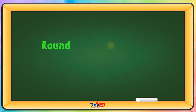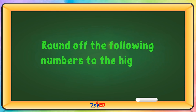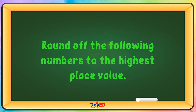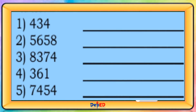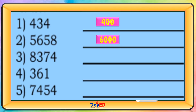Round off the following numbers to the highest place value. Let's round off 434 to 400; 5,658 to 6,000; 8,374 to 8,000; and 361 to 400. 7,454 to 7,000.